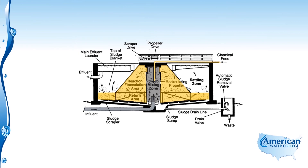Floc particles tend to get caught in the sludge blanket, so the sludge blanket acts as a filter to trap the floc so it doesn't float upward. As the water flows up through the settling zone, the purified or clarified water flows over the effluent weirs into the effluent launders.